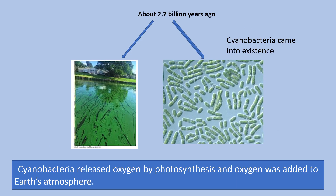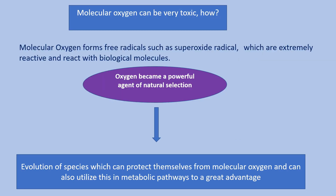About 2.7 billion years ago cyanobacteria came into existence. Cyanobacteria, by the process of photosynthesis, released oxygen into the earth's atmosphere and the conditions changed from anaerobic to aerobic. Because of photosynthesis by cyanobacteria, oxygen started building up in the earth's atmosphere. But molecular oxygen can be very toxic — it forms free radicals such as superoxide radicals which are extremely reactive and react with biological molecules. So oxygen became a powerful agent of natural selection.